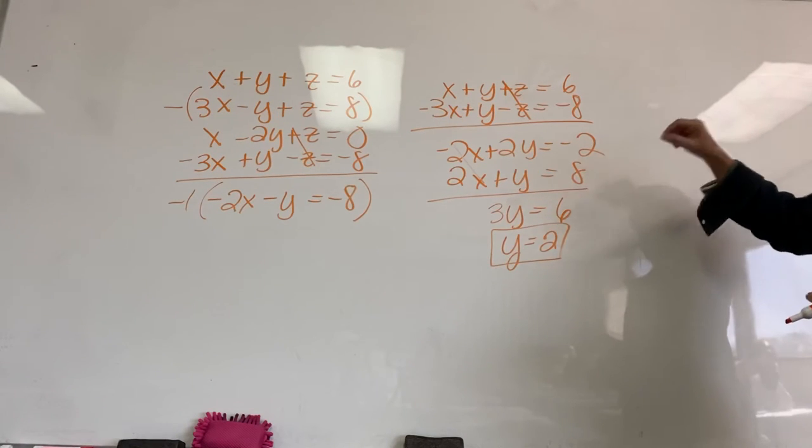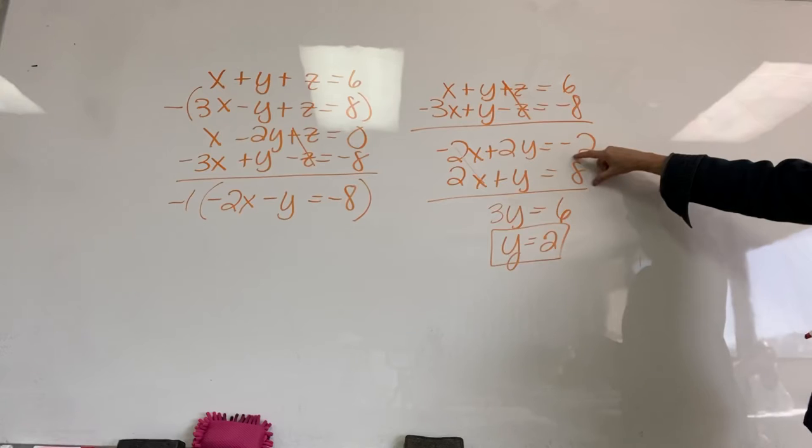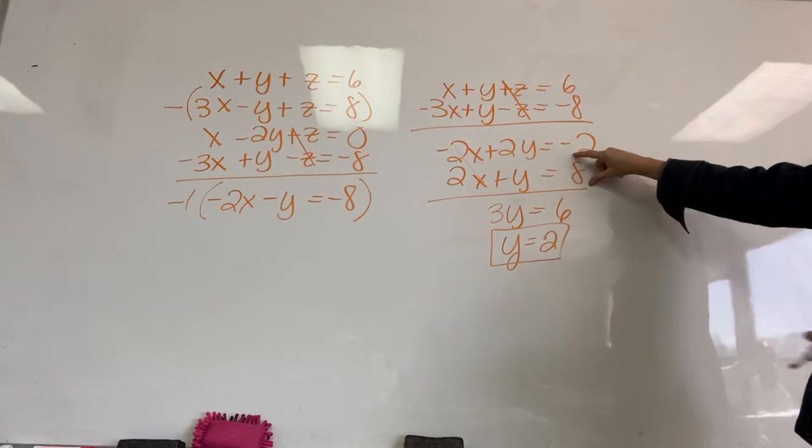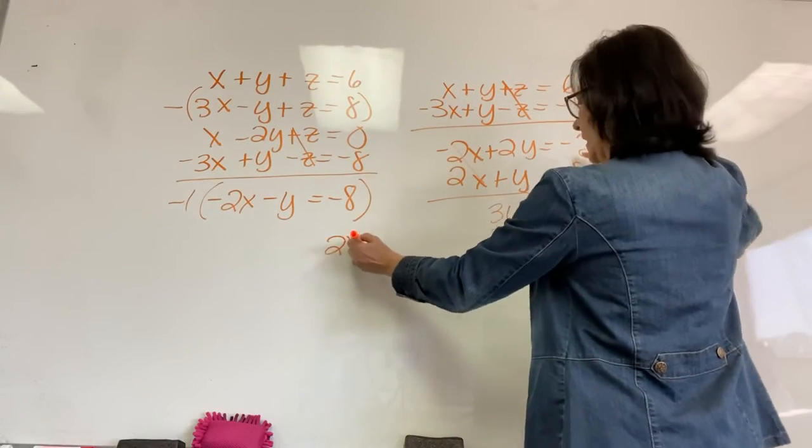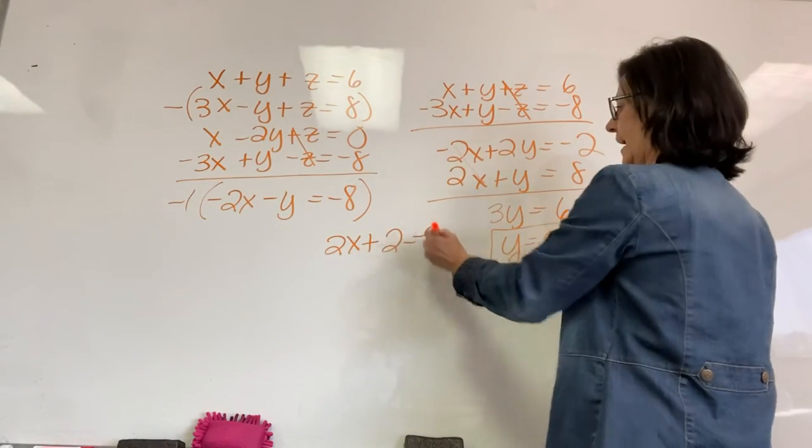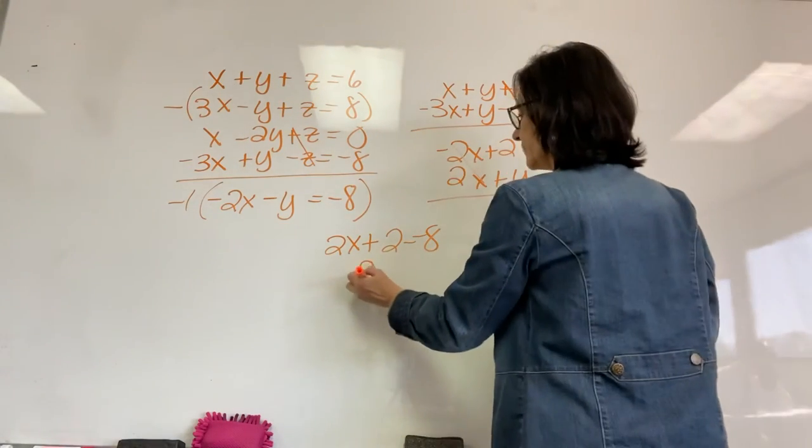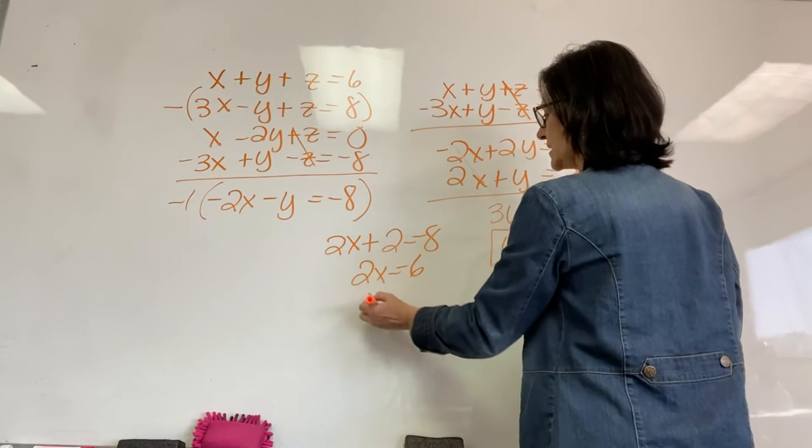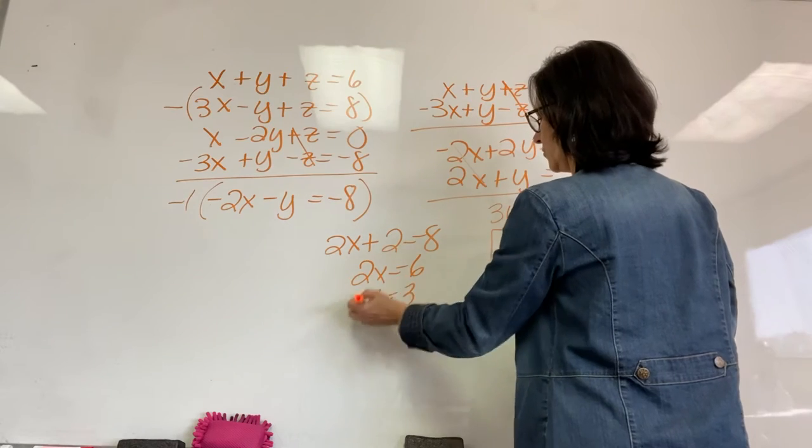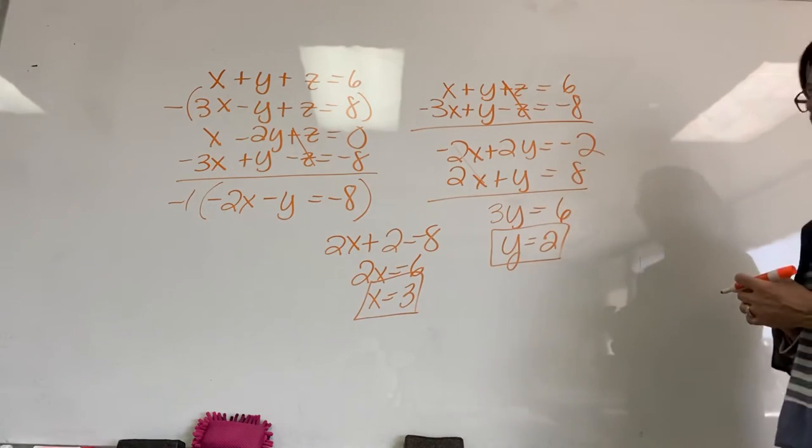I'm going to go back to this equation and solve for X. All right. So, we have 2X plus the value of Y equals 8. Subtracting that 2 on both sides, we have 2X equals 6. Dividing by 2, X equals 3. So, we have 3, 2. Is it 3, 2, 1?